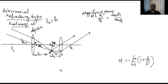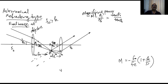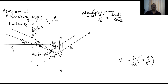These two rays emerge parallel to each other from the eyepiece, meaning the final image is formed at infinity. The angle theta_o is already marked, and theta_i is the angle subtended by the final image. Importantly, the points A, f_o, and f_e must all coincide at the same point — the intermediate image lies at the common focal point.